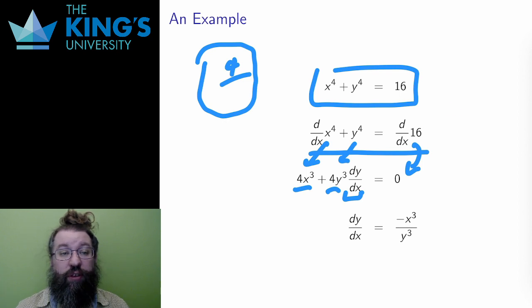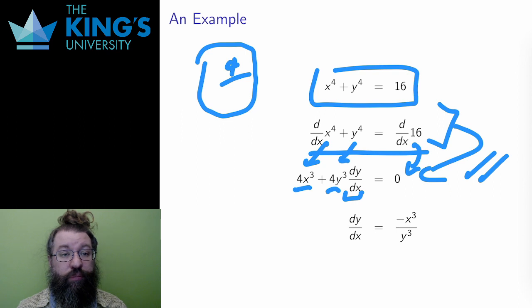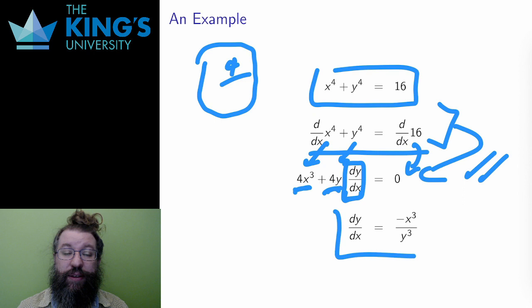And now I've differentiated both sides of this equation, so it's a valid operation that preserves the equation. Well, then I have this unknown dy over dx thing, so I'll just solve for it. I subtract 4x cubed, then divide by 4y cubed to isolate the dy over dx. And I get that dy over dx is negative x cubed over y cubed.